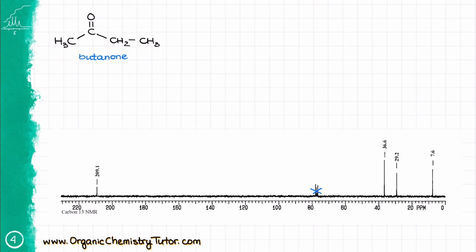Here is another example. In this butanone molecule, I have a carbon of the carbonyl at 209 ppm, then I have the CH2 group at 36 ppm, one methyl at 29, and another one at 7 ppm.